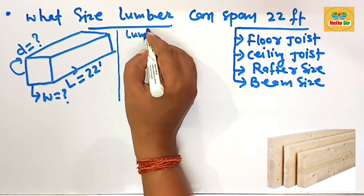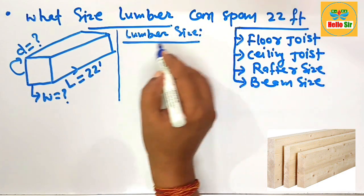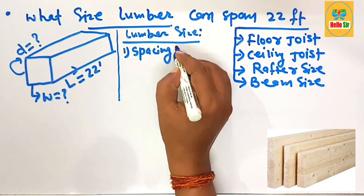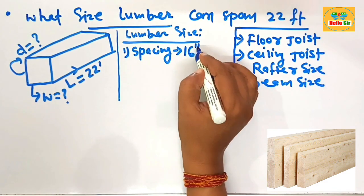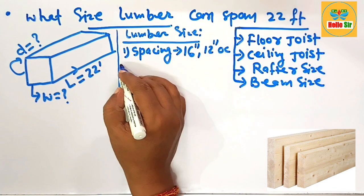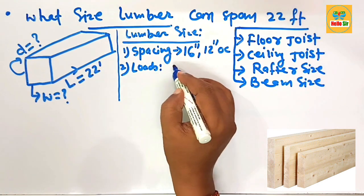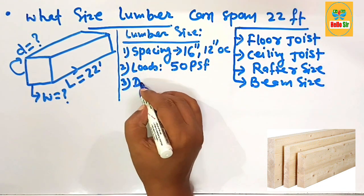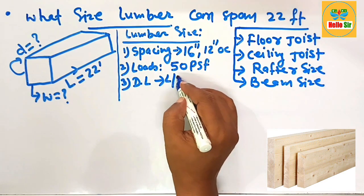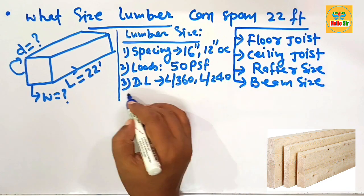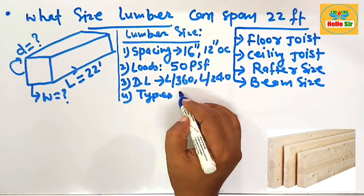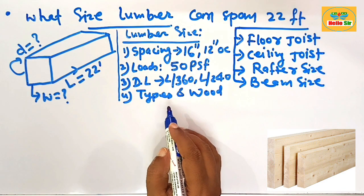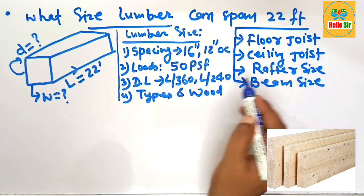The lumber size depends on several factors. First, the spacing between the joists — typically 16 inches or 12 inches on center. Second, the load, which consists of live load and dead load, typically 50 pounds per square foot. Third, the deflection limit, which should be L/360 or L/240. Fourth, the type and grade of dimensional lumber.